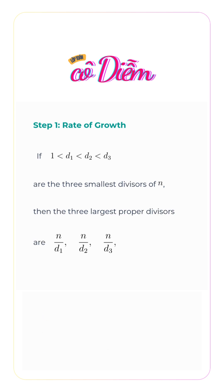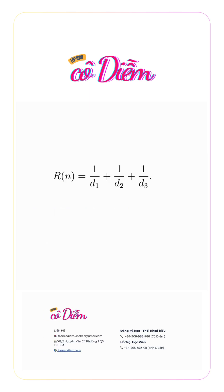If d_1 < d_2 < d_3 are the three smallest divisors of n, then the three largest proper divisors are n/d_1, n/d_2, and n/d_3. So R(n) = 1/d_1 + 1/d_2 + 1/d_3.